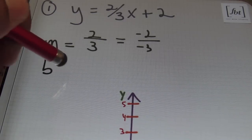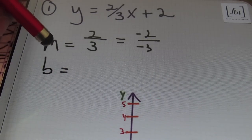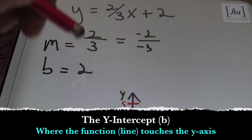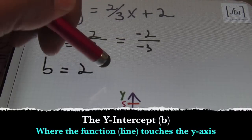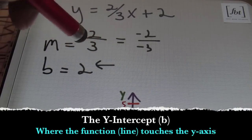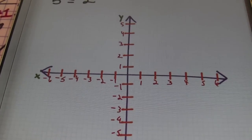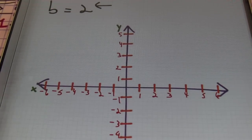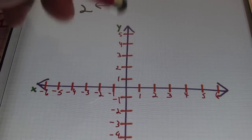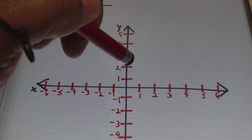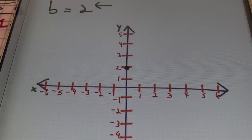The next number we'll need is the Y-intercept, that B value. In this case, my B value is 2, and as I told you, we're going to start graphing with the B value, that Y-intercept. So let's take a look at our graph. We're going to start with the B value of 2. On the Cartesian plane, that rectangular coordinate system, I'm going to plot 2 on the Y-axis. So there's my first point.